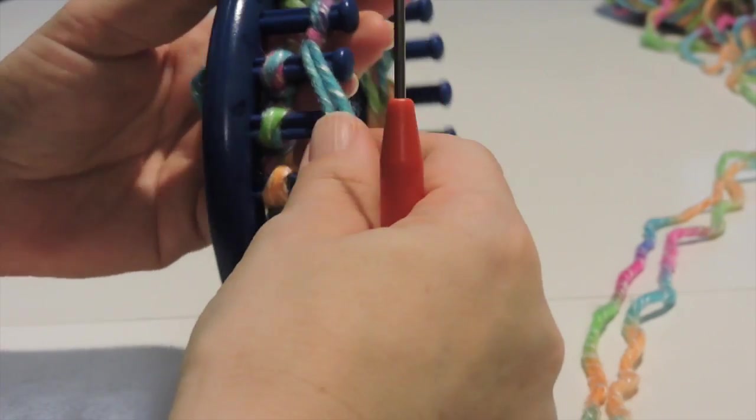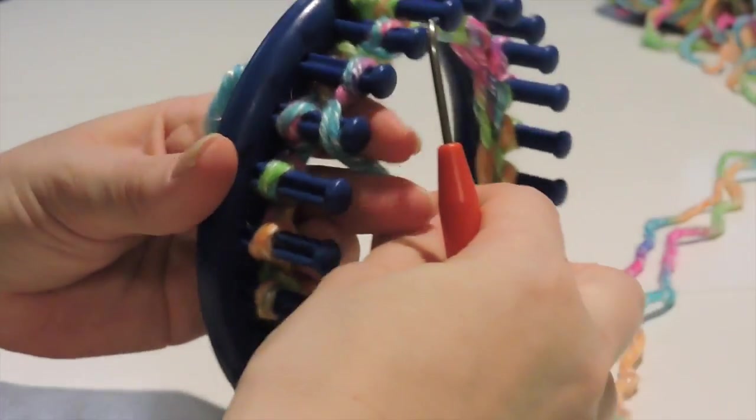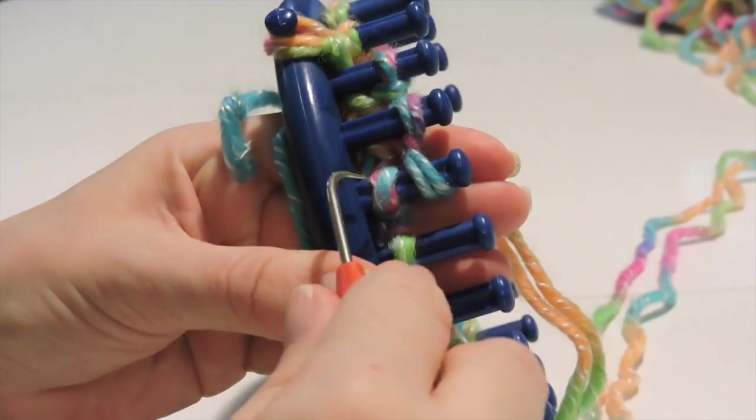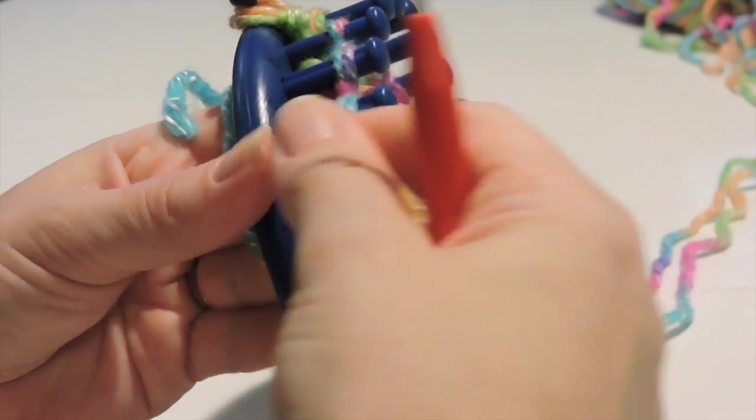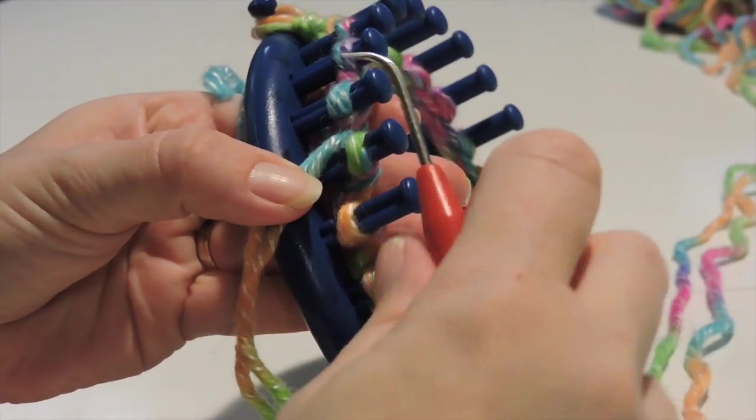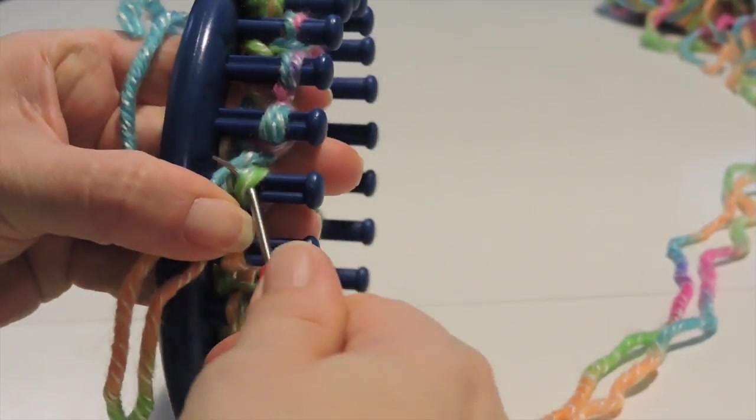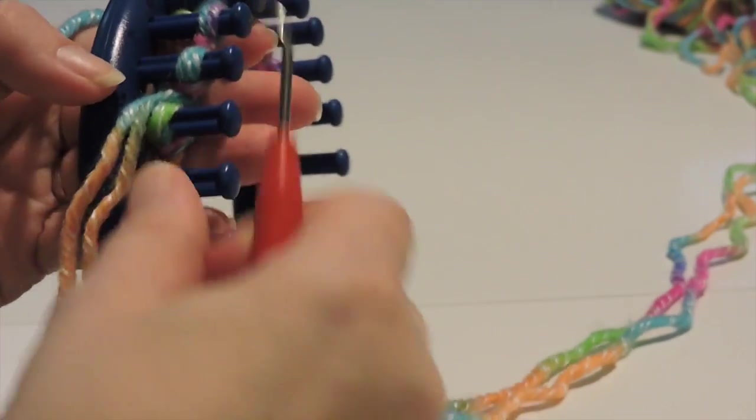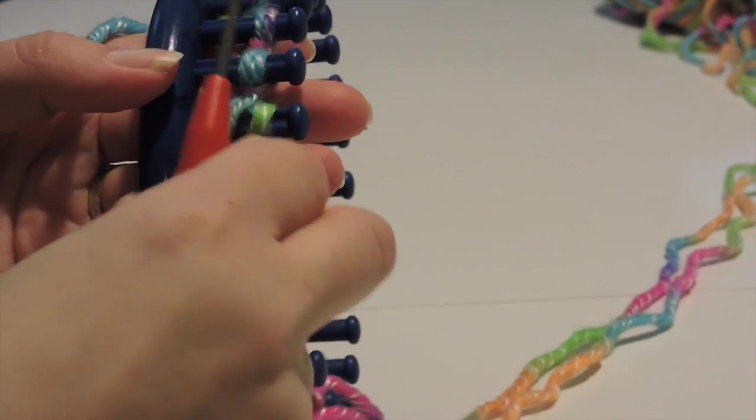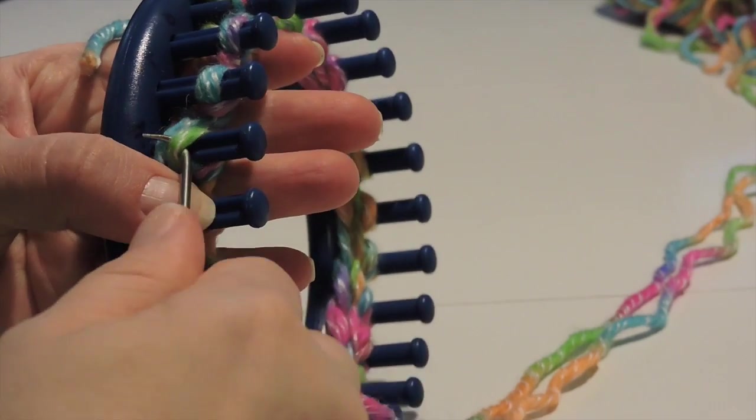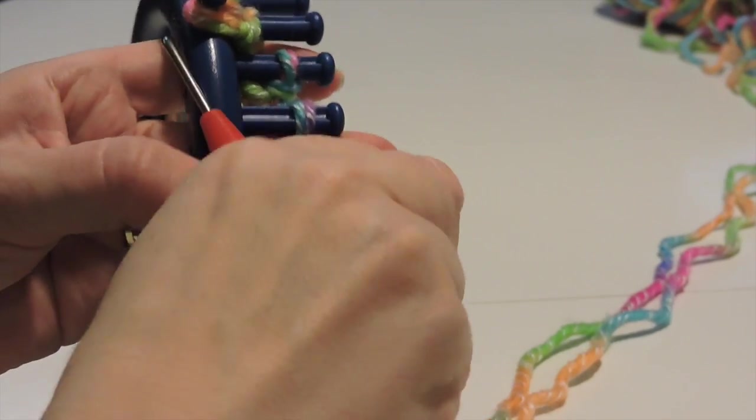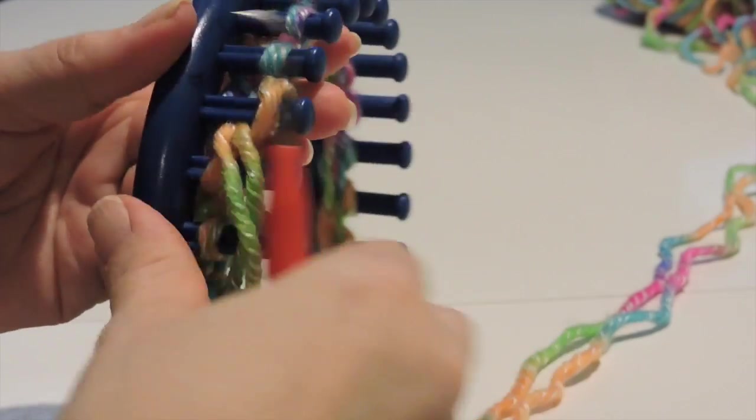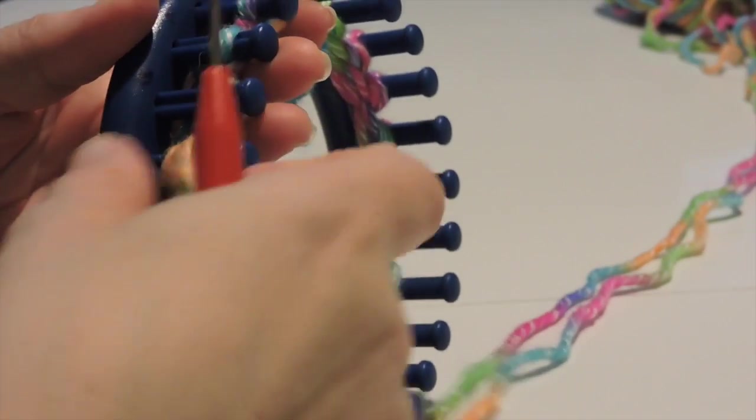And this is a flat knit where I'm just laying it over the top of the peg and taking the bottom over the top. This is the purl stitch where I'm putting the working yarn below the loop. Sometimes it can be a little tricky depending on how tight it is, and I take the loop through off the peg and reattach it.